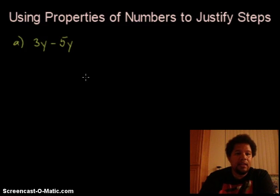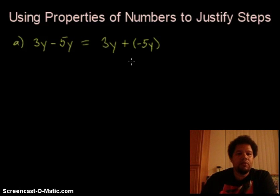So let's go ahead and take a look at this expression 3y minus 5y. I'm going to just write down the steps but then we're going to justify each step. So first, the first step in simplifying this expression is I rewrote the subtraction as plus a negative 5y.